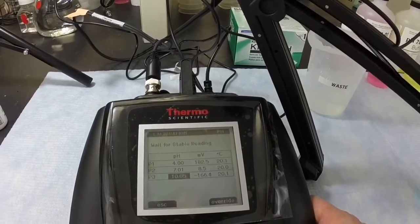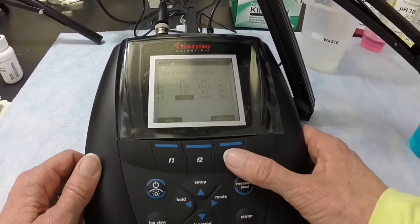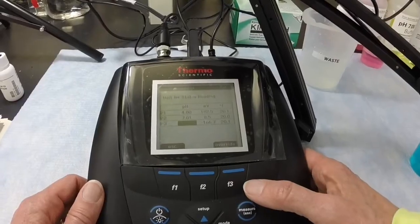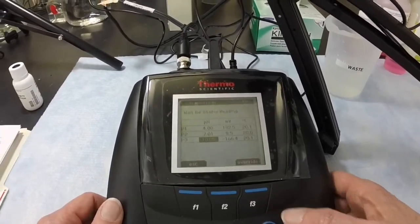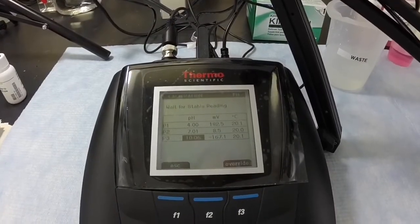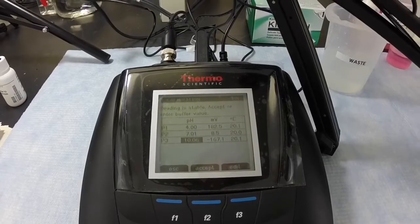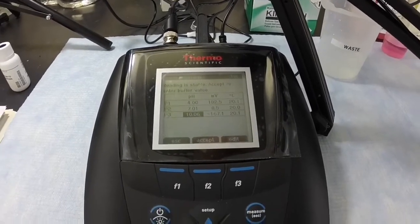We can see all three calibration points on the meter display, including the pH, the millivolt value, and the temperature. When the reading is stable, the reading will freeze, and the correct pH value for that temperature will display. We will choose ACCEPT.